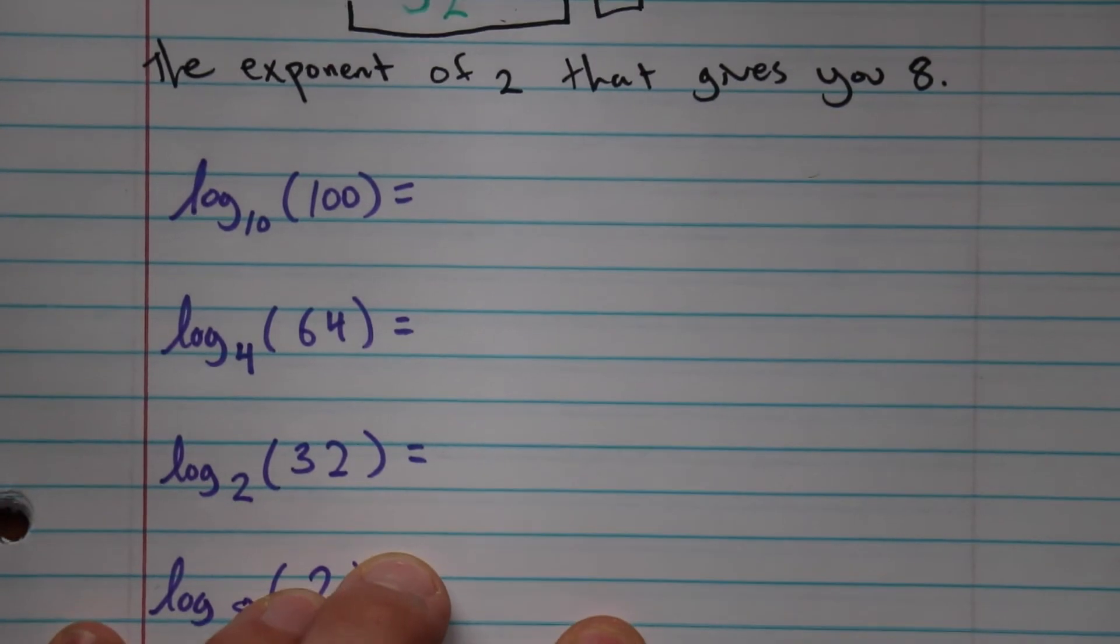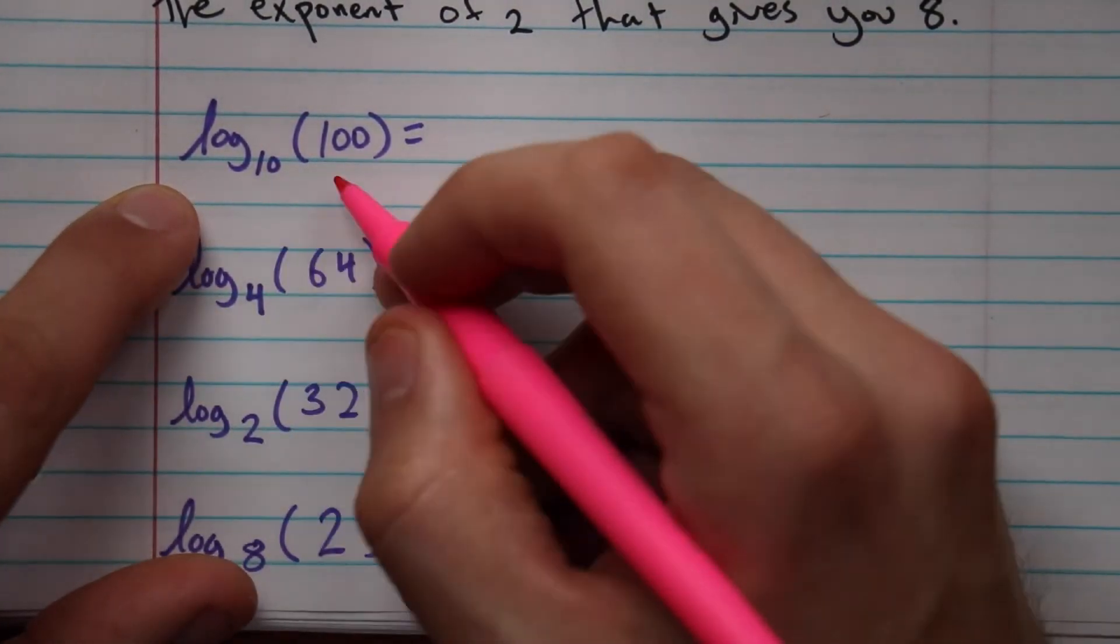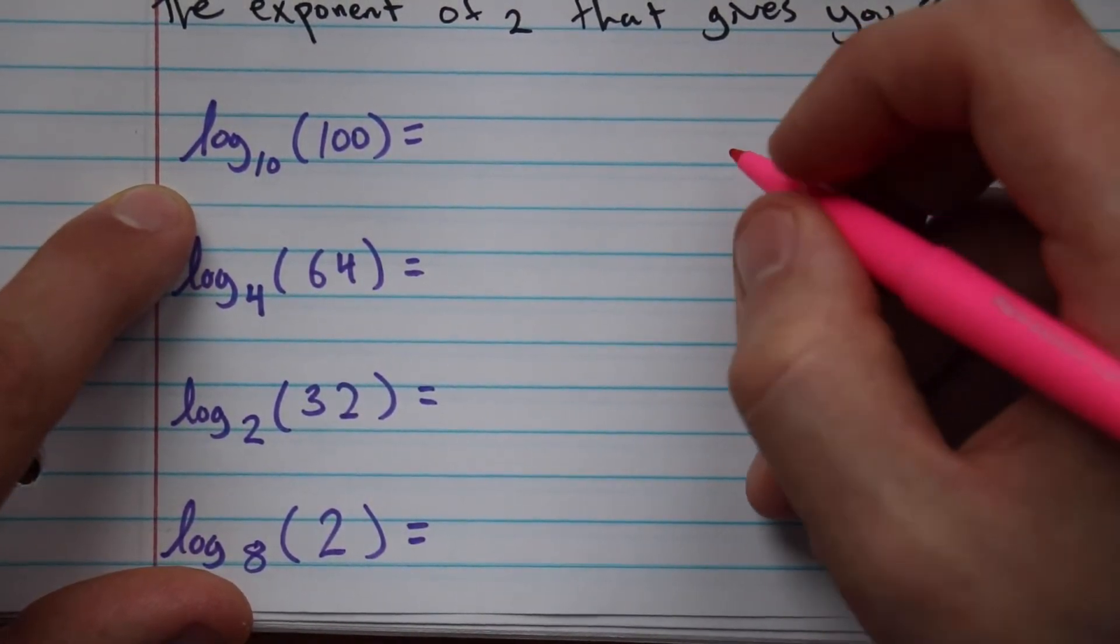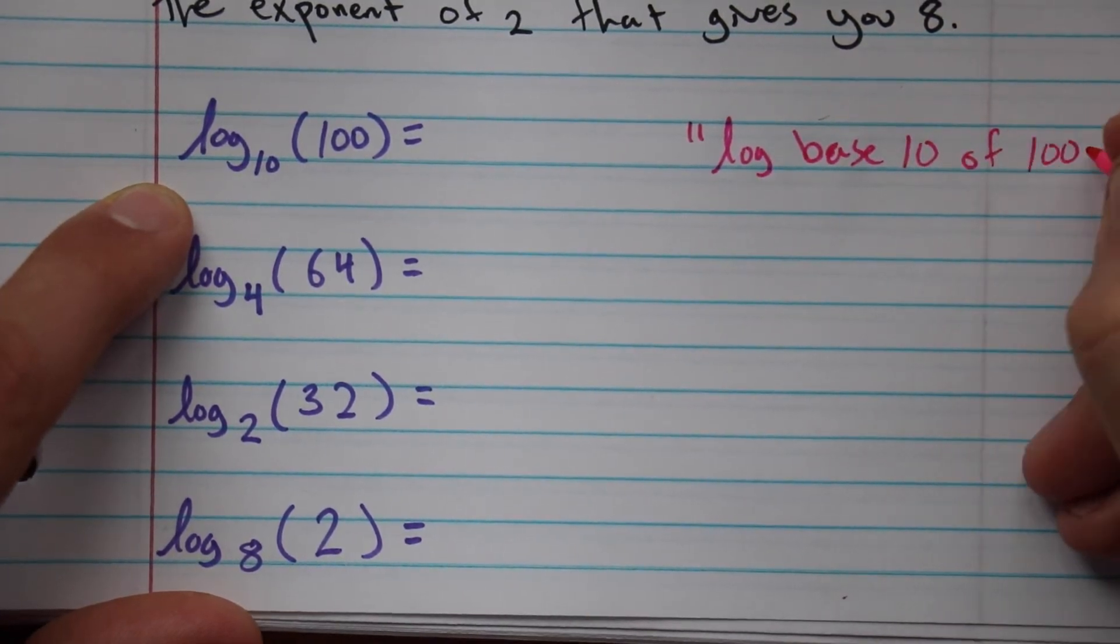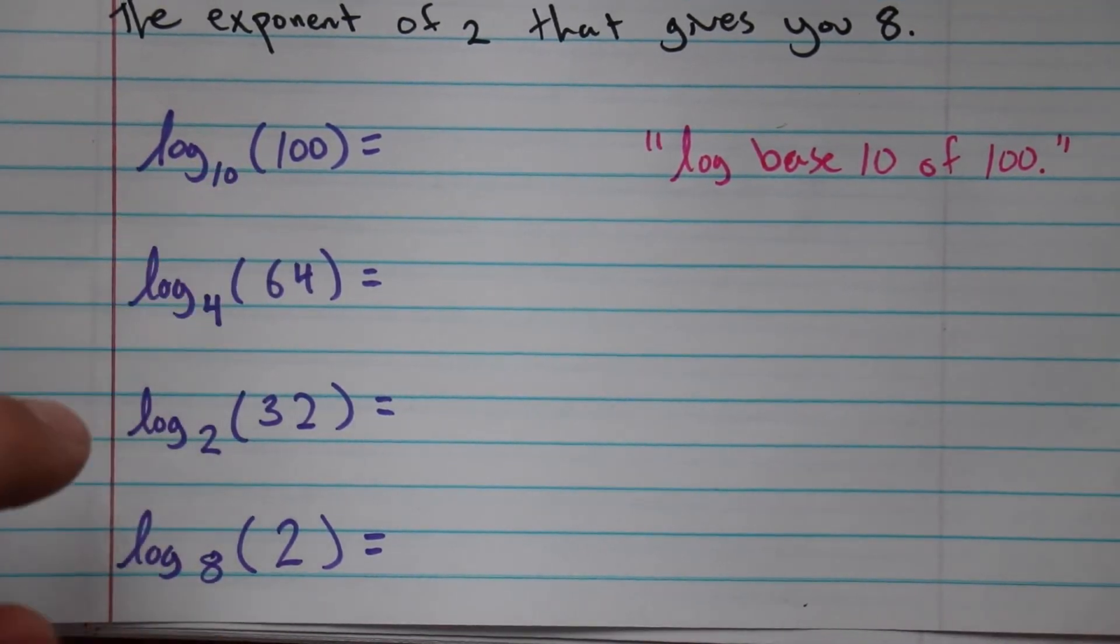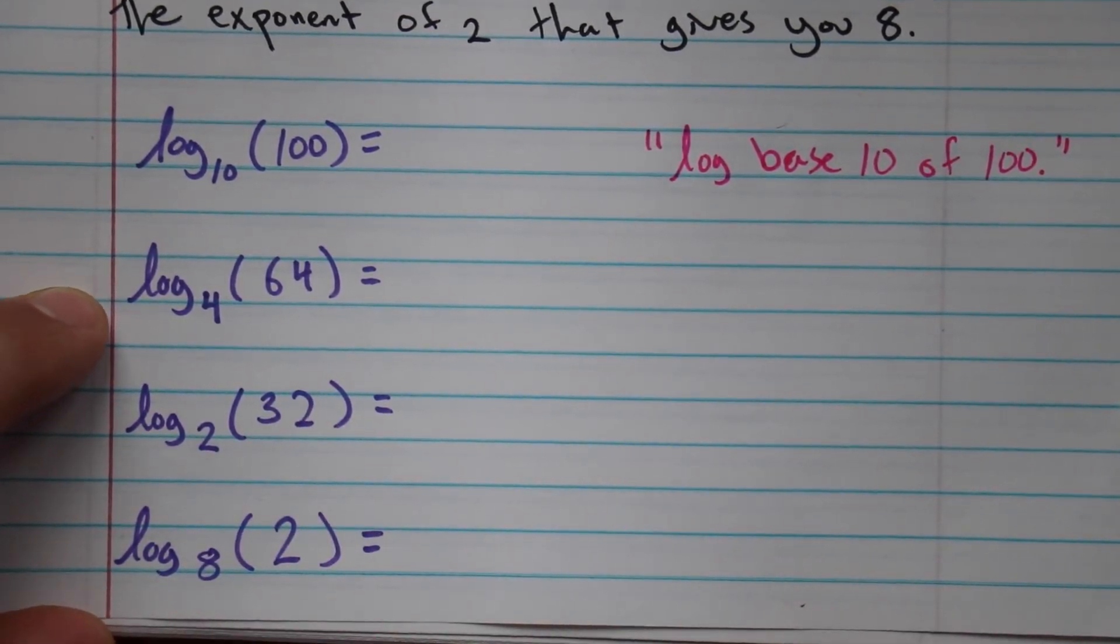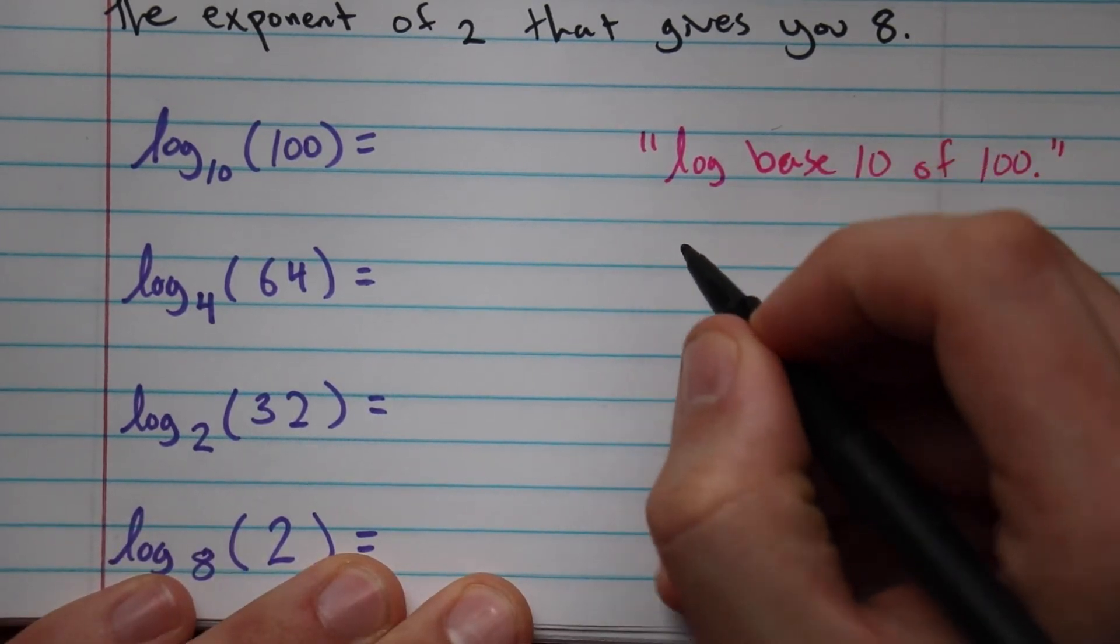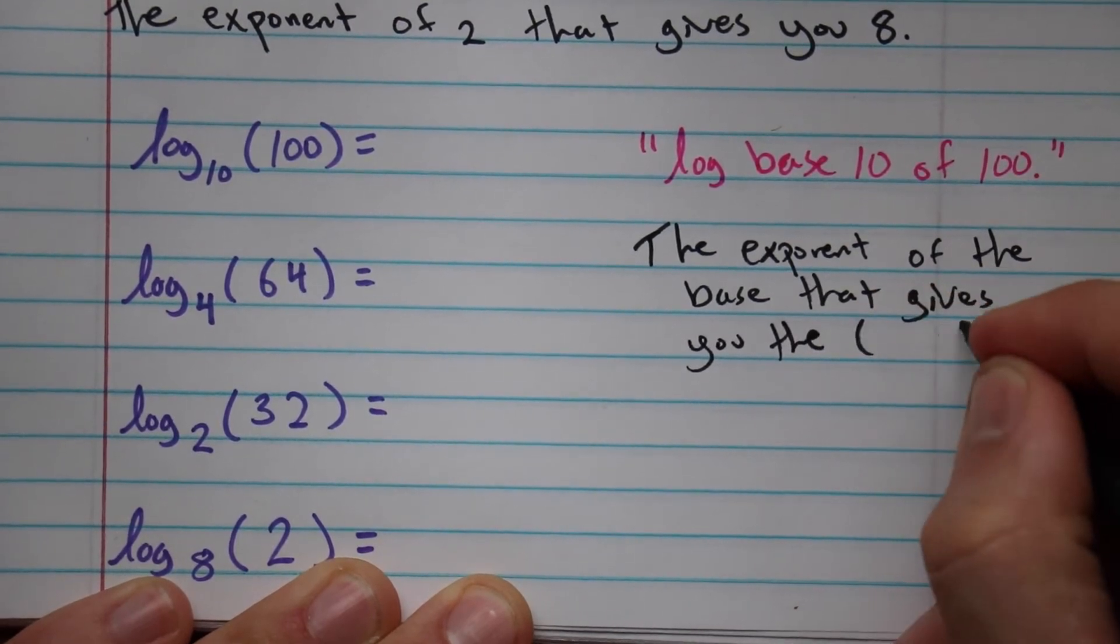As a reminder, a little friendly way to remember, we say this notation a very particular way. In this case, we would say the phrase log base 10 of 100. That's how we would say this expression. Log base 10 of 100. Same thing here: log base 4 of 64, log base 2 of 32, and log base 8 of 2.